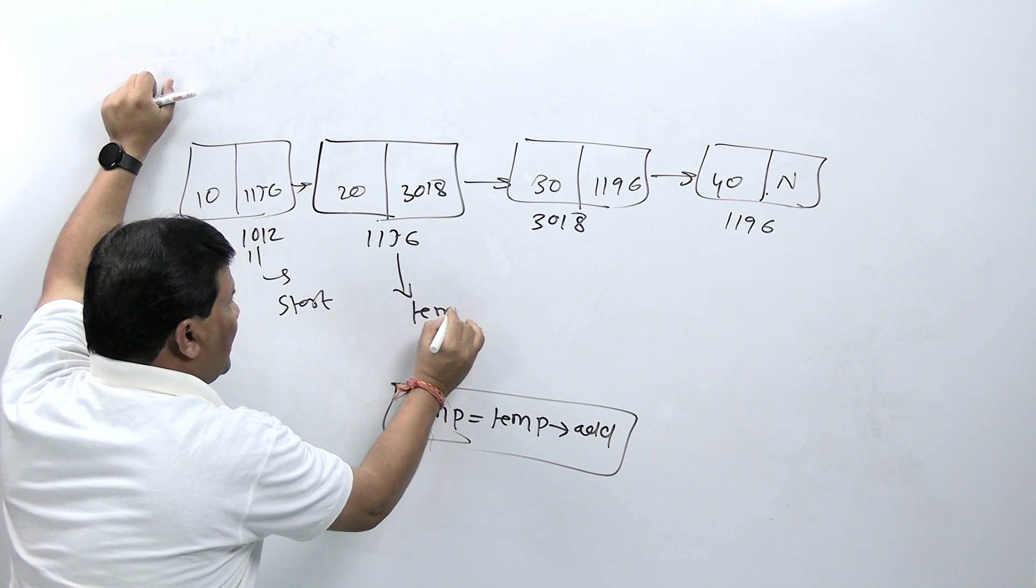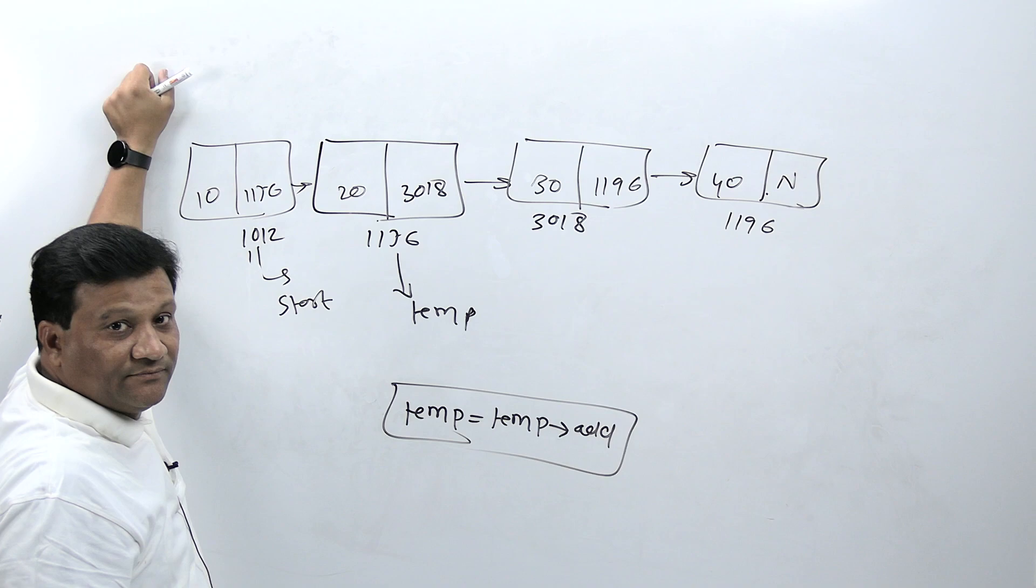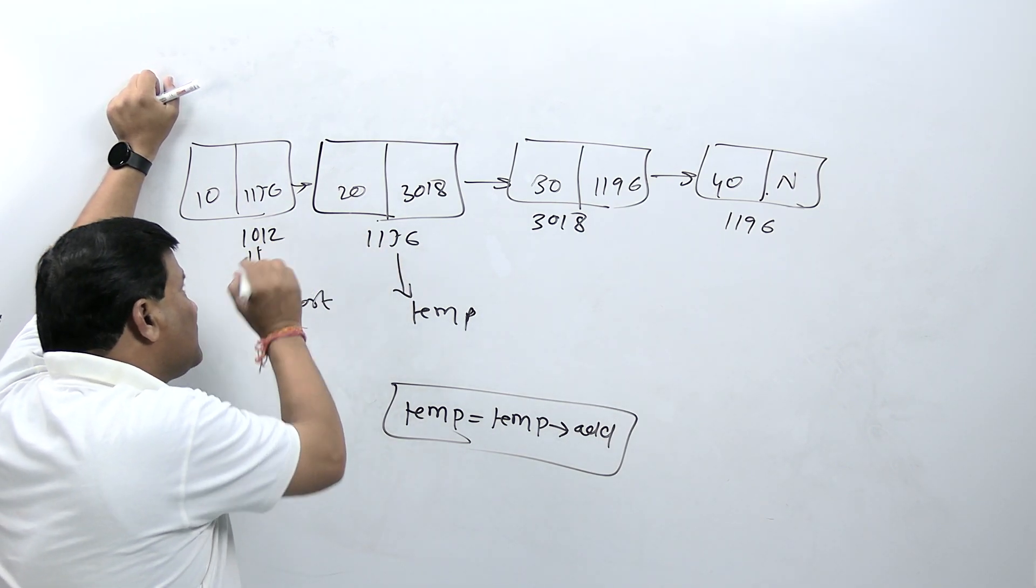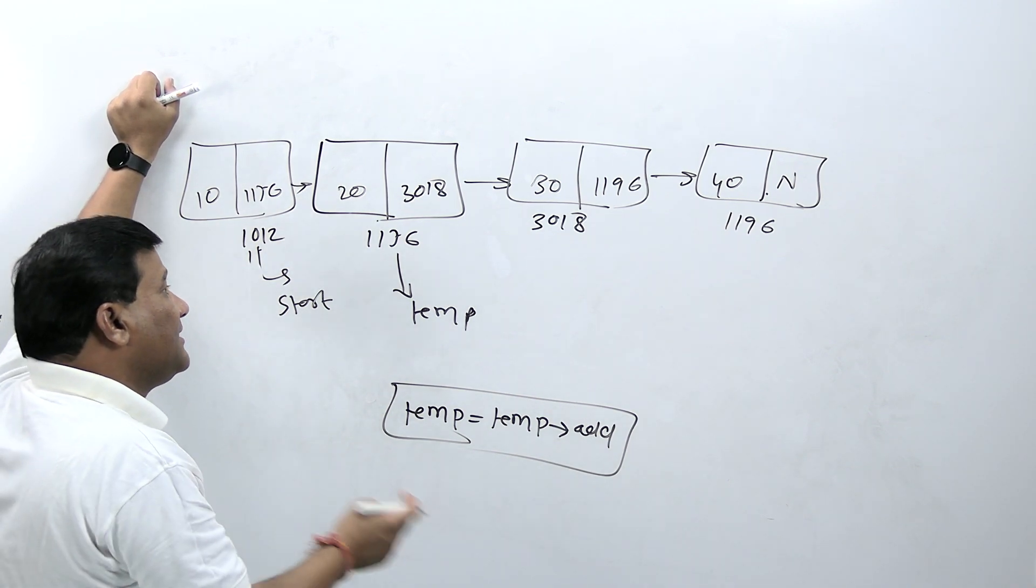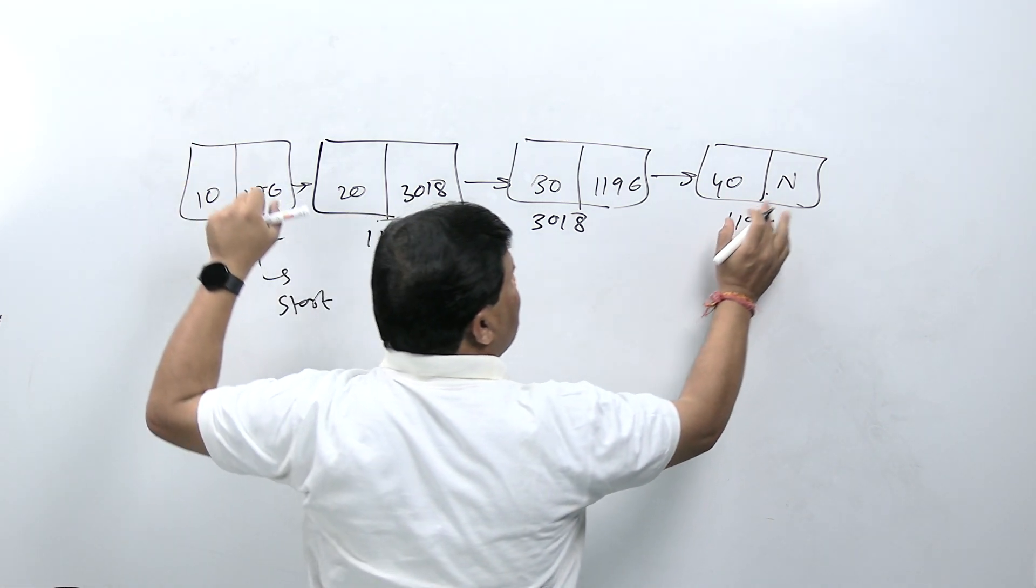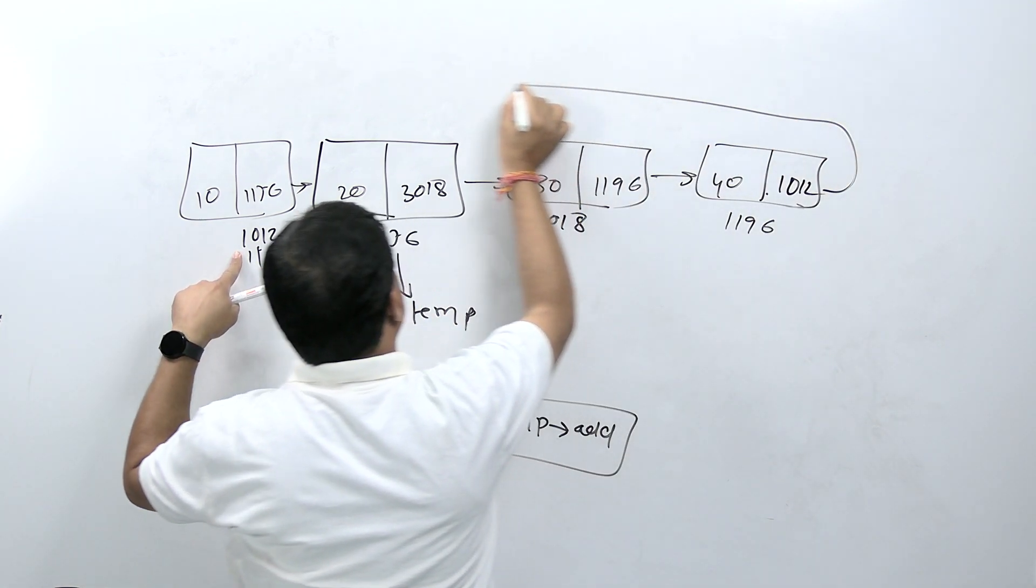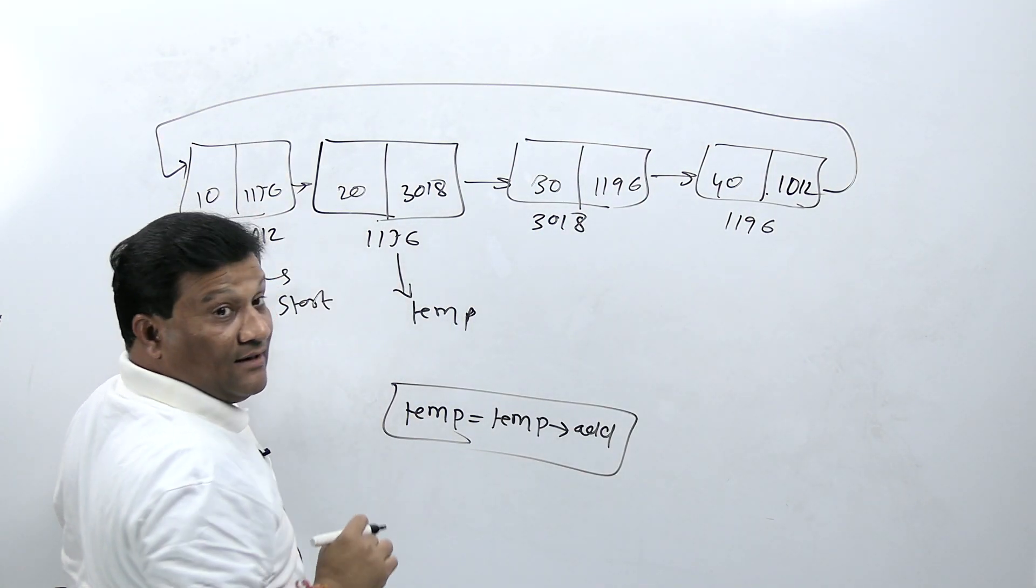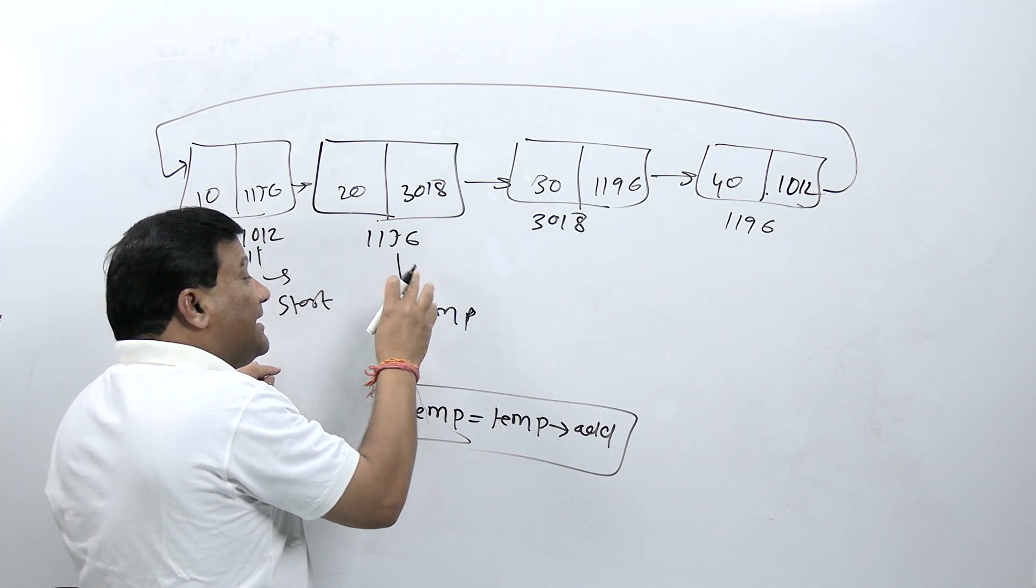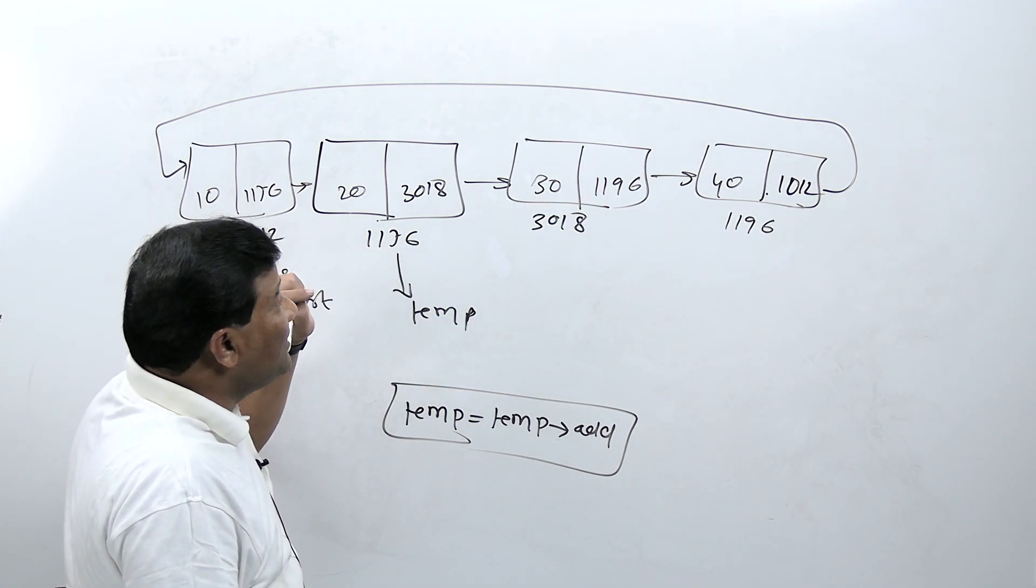But if I ask you to move backward from this node, there is no option. This node knows the next node but doesn't know previous node. One solution is to make circular linked list. In circular linked list we do this: the address of first node we give to last node, so this node connects here.